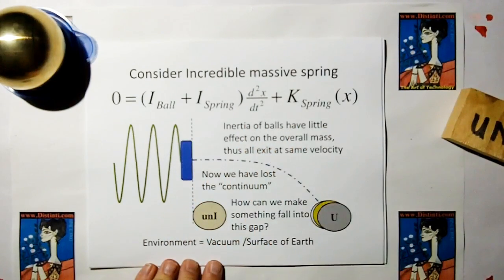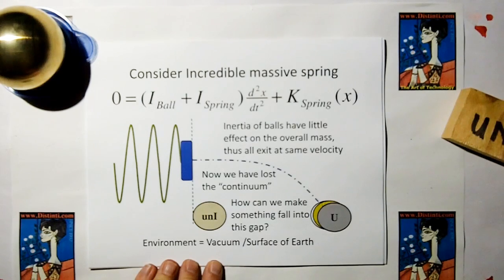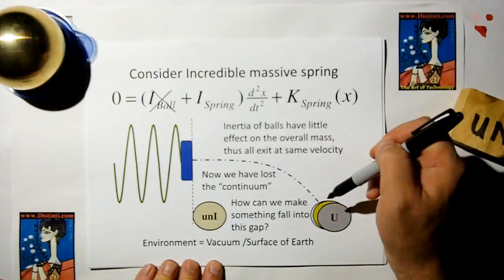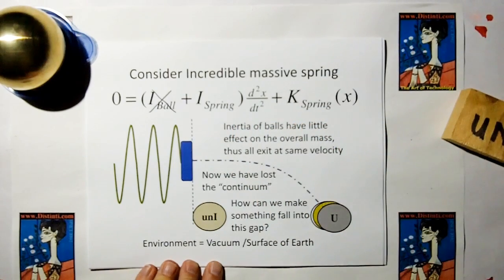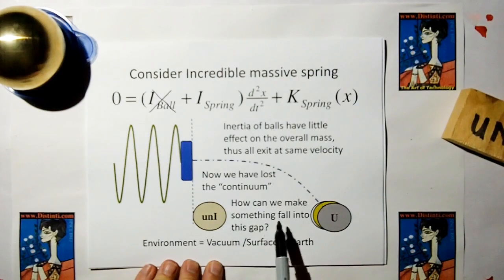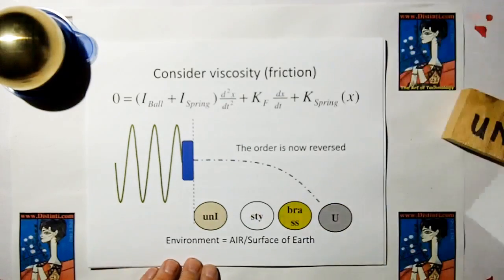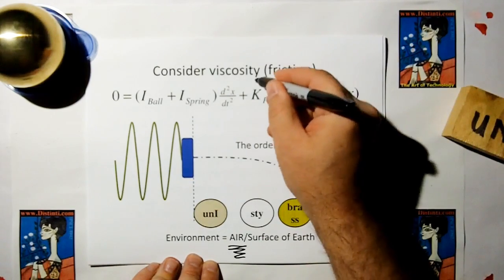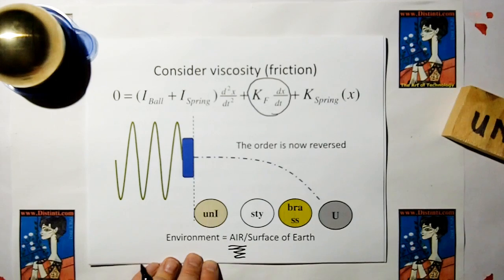Now consider an incredibly massive spring — like the kind used to stop locomotives — such that the mass of the spring is so much heavier than all the cannonballs we're trying to accelerate. Because the inertia of the cannonballs has very little effect, all balls with inertia are going to end up with almost the same velocity and hit the earth at the same place. But now we've lost the continuum. We can restore it by considering friction: adding air and the coefficient of friction times velocity gives us another way to lose energy. Now we get our continuum back, and it's more normal — the lighter object is closer to uninertium, the heavier object farther away.